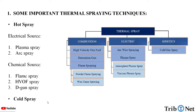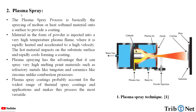Here in this video, we will be discussing about three techniques, that is plasma spray, arc spray, and flame spray. The first one — plasma spray. The plasma spray process is basically the spraying of molten or heat-softened material onto a surface to provide a coating.